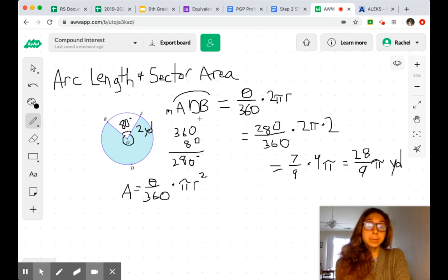Now we're working with the same values here. Because we know what this 280 over 360 simplifies to, I'm going to go ahead and write in 7/9 right away. So we're finding 7/9 of our total area.